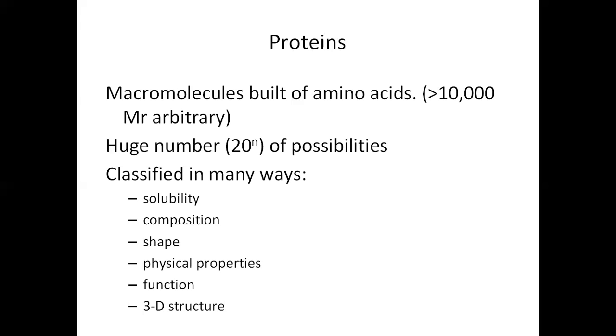There are potentially a huge number of proteins. To be precise, there are 20 to the nth possibilities, and it can be any number of amino acids in that protein. Consequently, protein chemistry can be a little bit overwhelming and there are not less than six different ways that we can classify proteins.